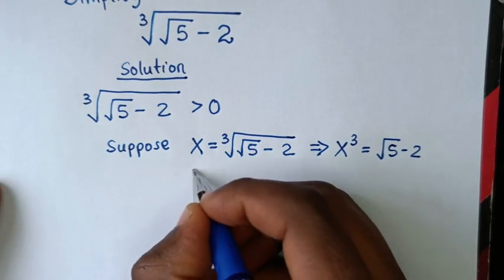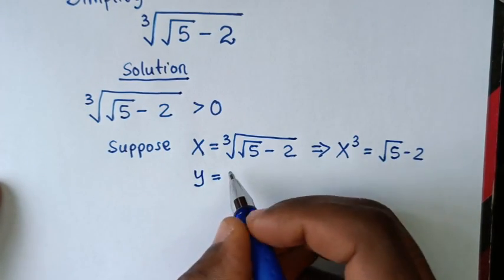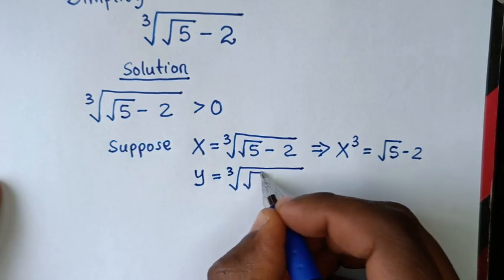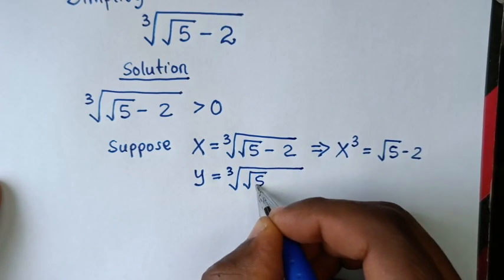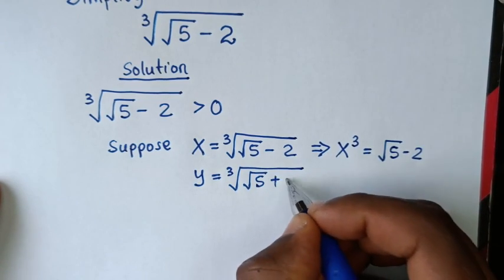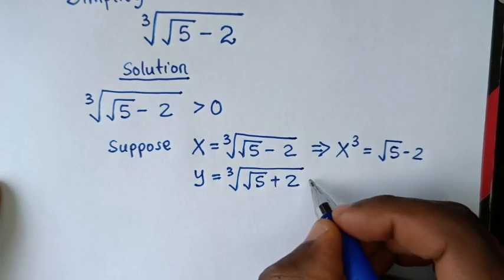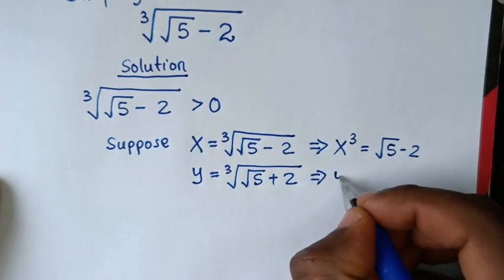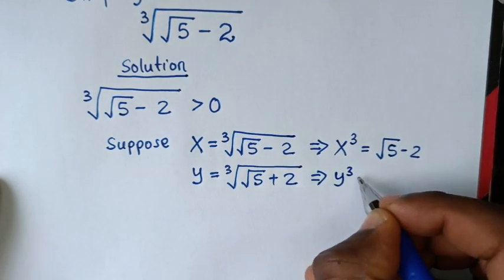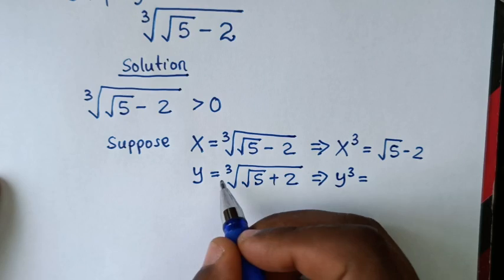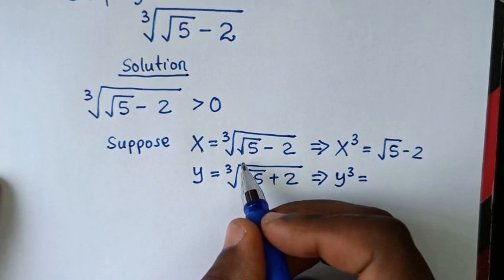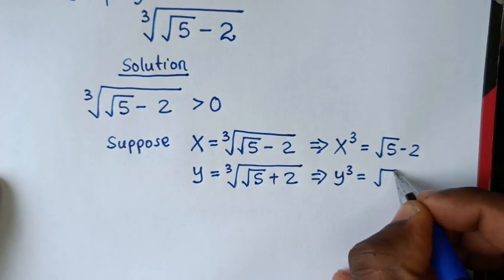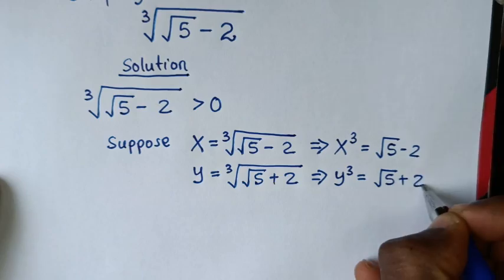Also, y is equal to cube root of square root of 5 — here we have minus, so it will be plus 2. When we raise both sides to the power of 3, y cubed is equal to square root of 5 plus 2.